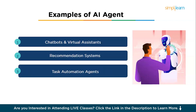Task automation agents can automate repetitive tasks, saving businesses time and improving efficiency. For example, AI can automatically sort and categorize emails or schedule meetings. These agents work behind the scenes to streamline workflows. In customer service, AI can handle routine queries, allowing support agents to focus on more complex issues, leading to quicker response times and more satisfied customers.